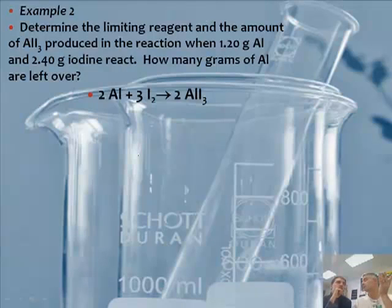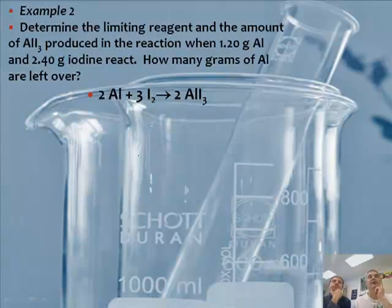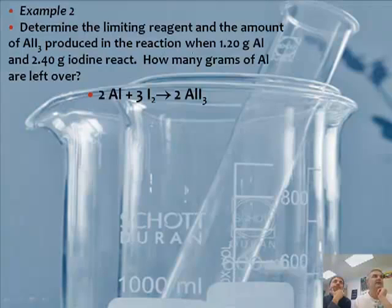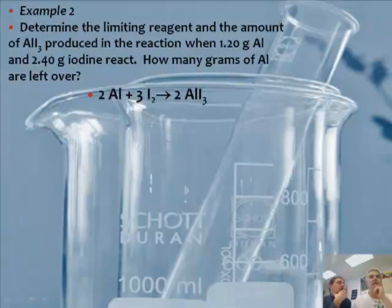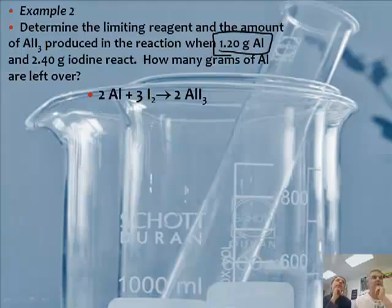Okay, so here's example two. We have a balanced equation — we're being nice this time. Determine the limiting reactant and the amount of aluminum iodide produced in the reaction when 1.2 grams of aluminum and 2.4 grams of iodine are used. There are two masses of two different substances, so this is a limiting reactant problem.